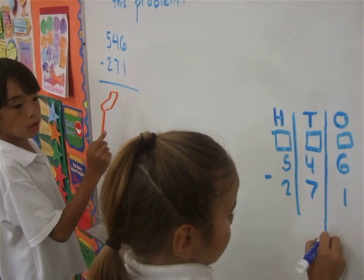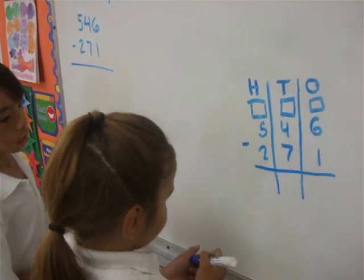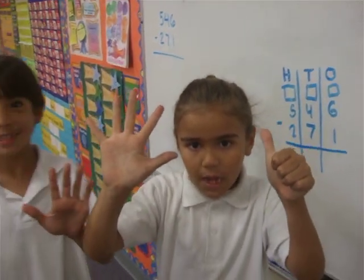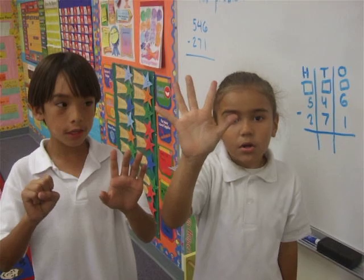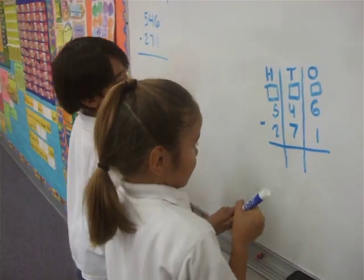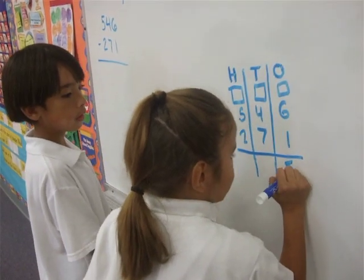And then we write equals. Six minus one equals five. So we write five on the ones.